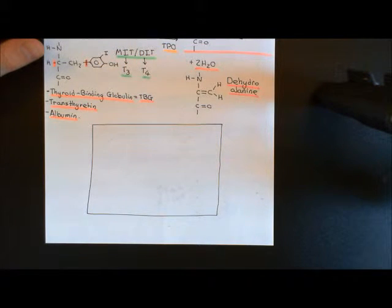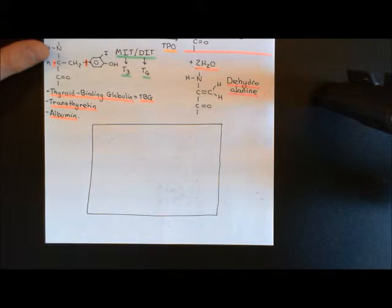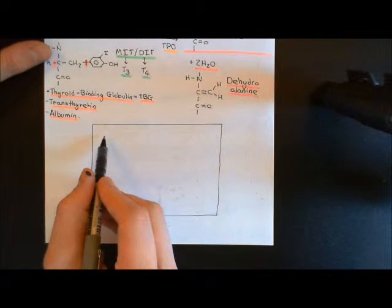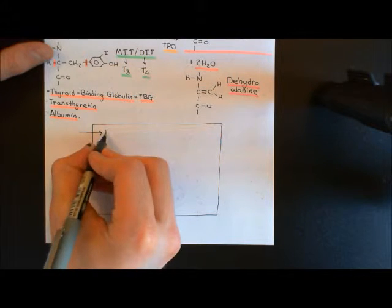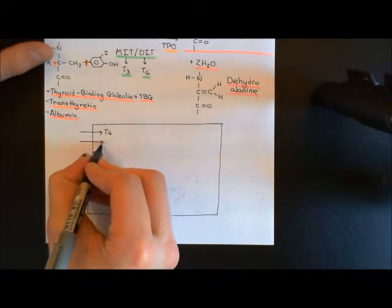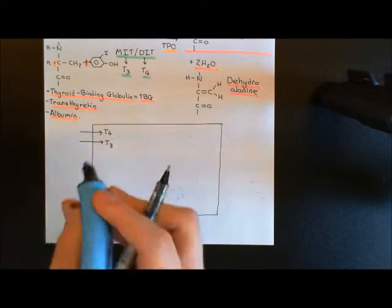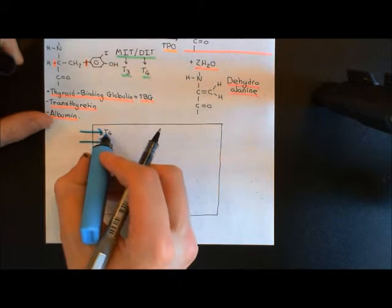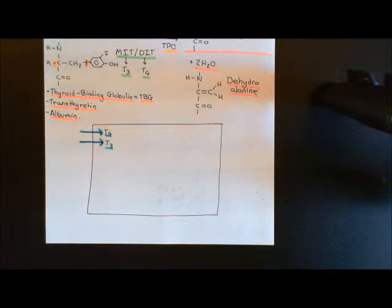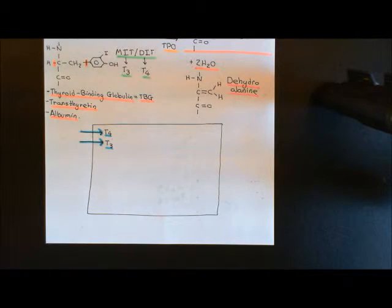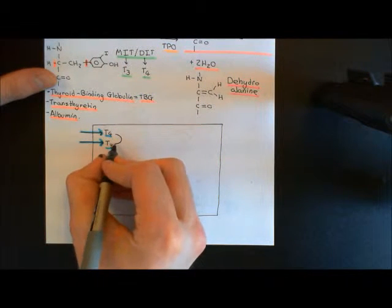Before we get to the thyroid receptor, I want to mention that T4 is the main hormone the thyroid actually synthesises — about 90% of the thyroid hormone molecules released into the bloodstream are T4, and 10% are T3. However, when you arrive at the tissue, a lot of the T4 molecules can be converted into T3 molecules. The means by which T4 and T3 get into peripheral cells is not very well understood — whether they just diffuse through the cell membrane is unclear — but they do get from the bloodstream into the peripheral cells.